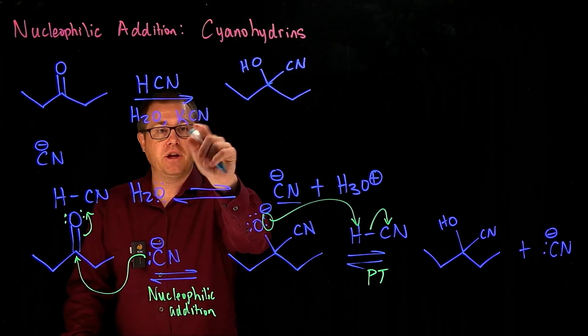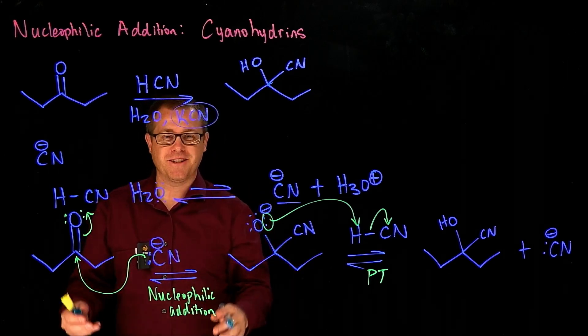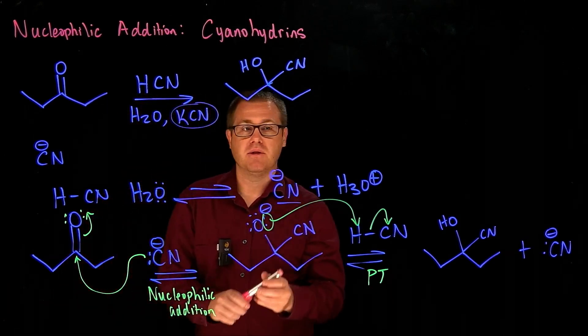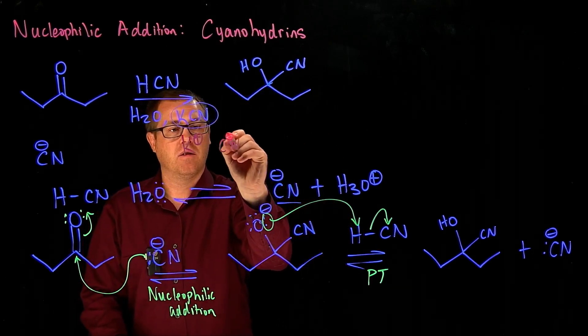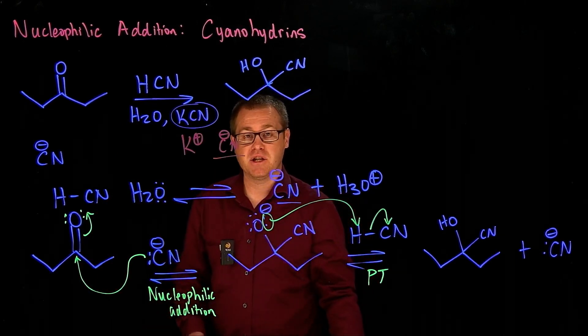Why? Because when you take potassium cyanide and put it into water, what is it going to do? It's going to dissociate. It will dissociate into its ions. And so now we have just a higher concentration of cyanide.